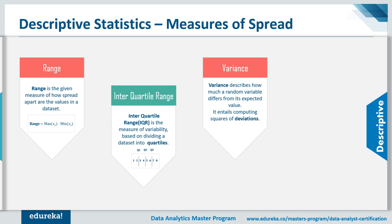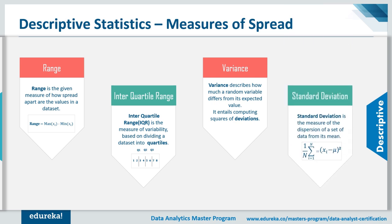Variance describes how much a random value differs from its expected value — it involves computing squares of deviations. Standard deviation is the measure of dispersion of a set of data from its mean. For more depth on these statistical calculations, a statistics for data science video link will be left in the description box.